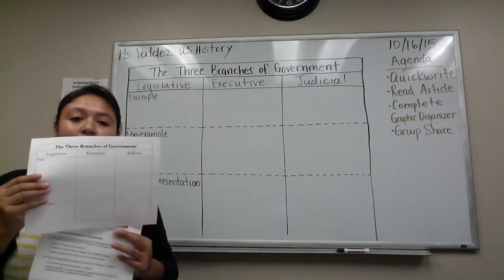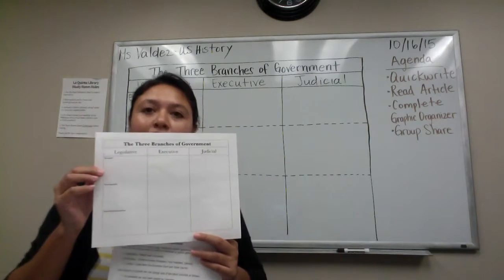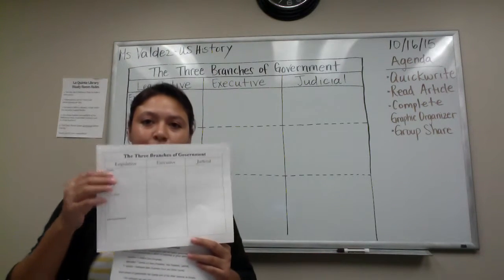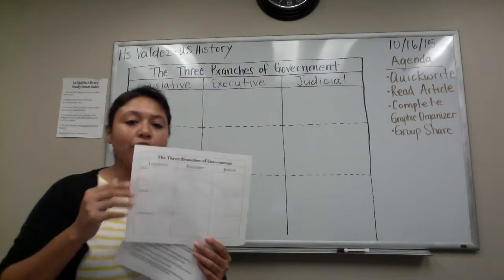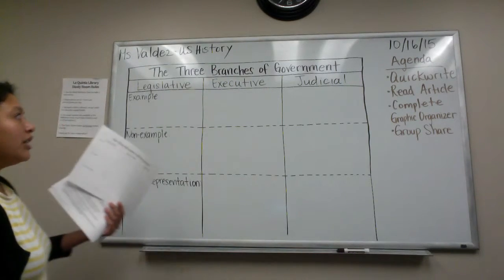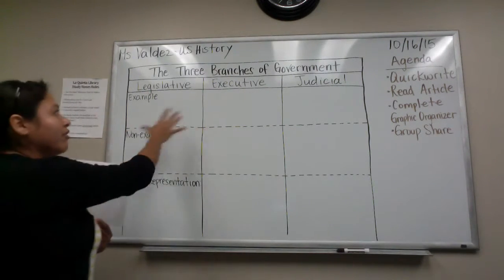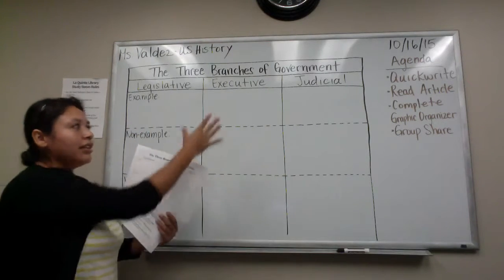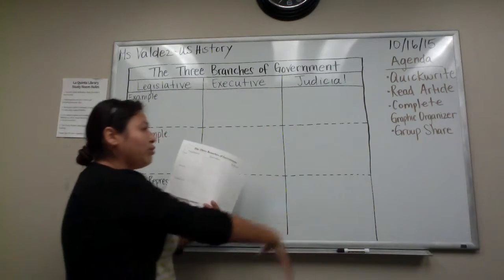So here is your graphic organizer. Everybody should have one of these as well. The graphic organizer is divided into the three branches of government: the legislative branch, the executive branch, and the judicial branch.